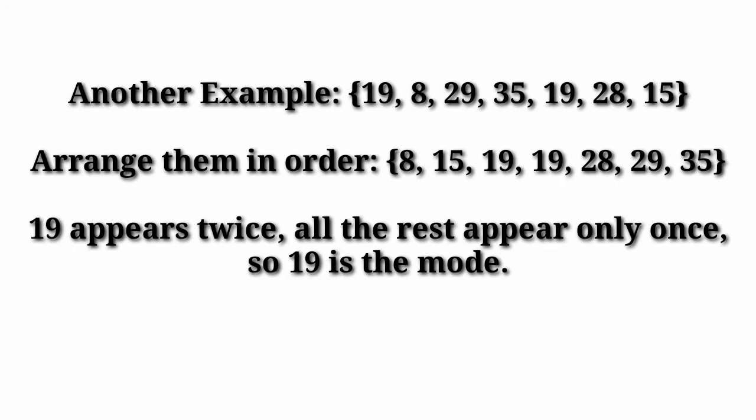Another example: 19, 8, 29, 35, 19, 20, 8, 15. Arrange in increasing order. Which number is occurring the maximum number of times? Here, 19 is occurring the maximum number of times — it appears two times. So the mode of the given data will be 19, because as per the definition, for ungrouped data, the observation having the highest frequency is the mode.